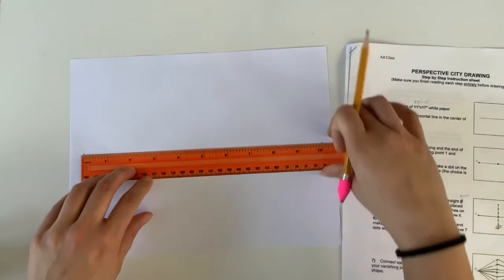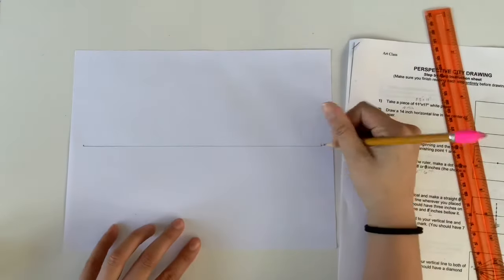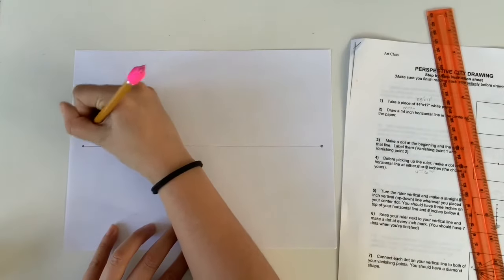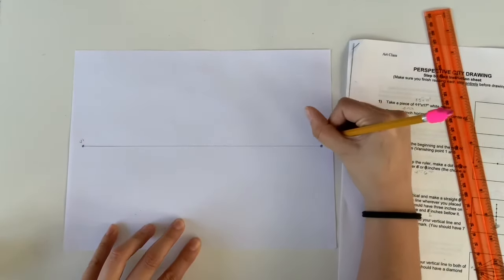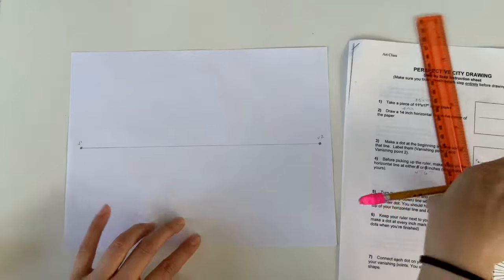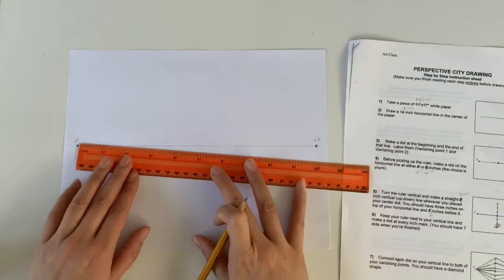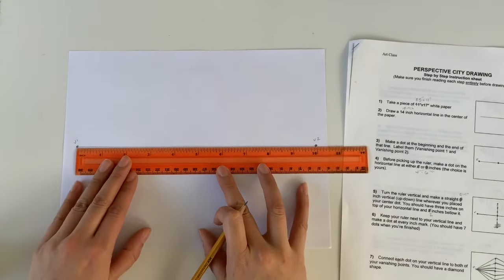When I'm done that, I'm going to create a dot on either side of this line and I'm going to label them V1 and V2 and that stands for vanishing point 1 and vanishing point 2. Since we're doing two-point perspective there's going to be two vanishing points in this image.